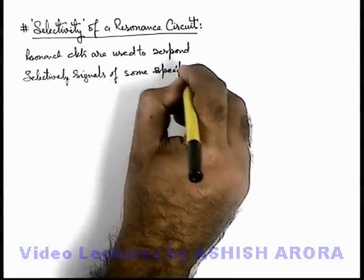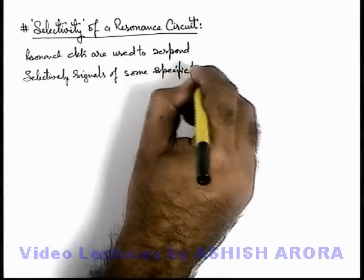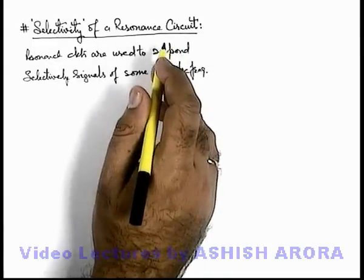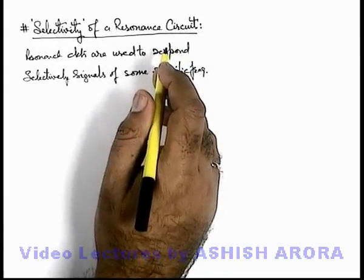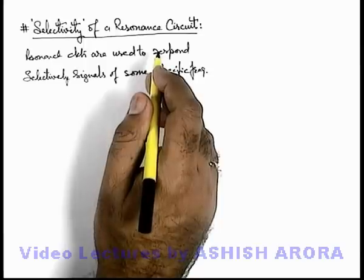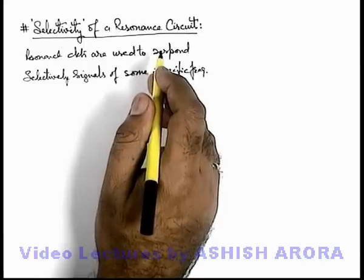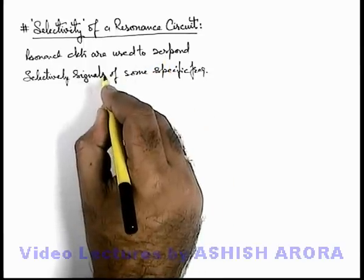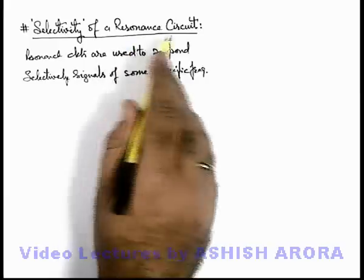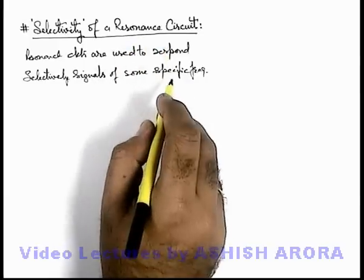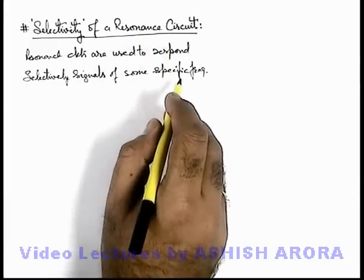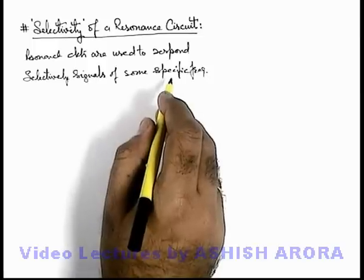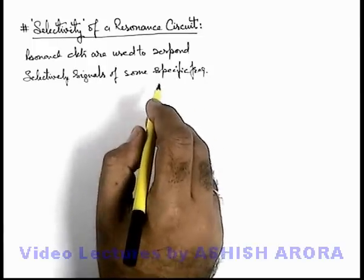As we know, in a resonance circuit at a particular frequency the power consumed by the circuit is maximum. So we can say if there are many signals of different frequencies, resonance occurs at a specific frequency, so the circuit will respond to a signal of specific frequency with maximum power.